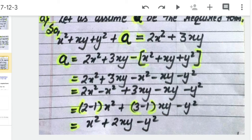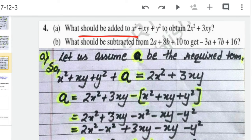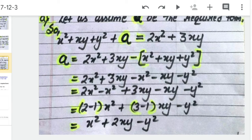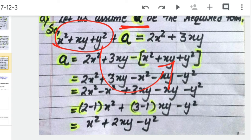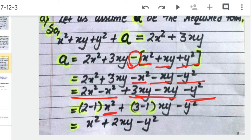After opening the bracket, we put all like terms together and take the algebraic factors common. For the second part, positive x² becomes negative x², positive xy becomes negative xy, and positive y² becomes negative y². Collecting like terms and taking the algebraic factor common gives us our answer for question 4 part 1.